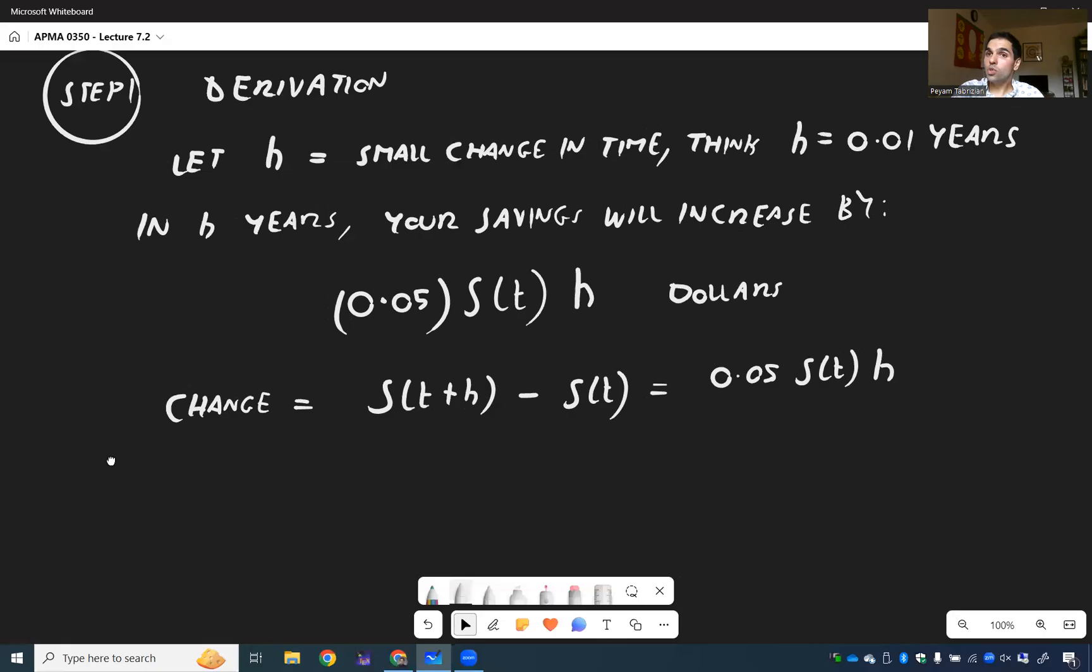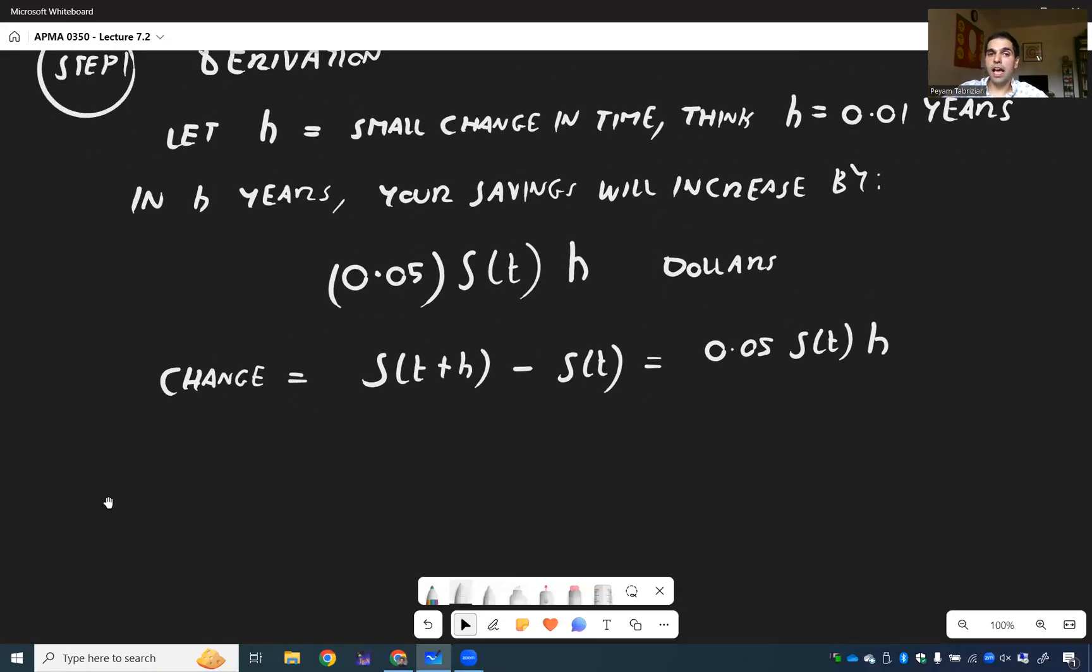And what you want to do, because you want to write this as a derivative, you divide this by h, and we, in fact, get a difference quotient over h is 0.05 S(t).